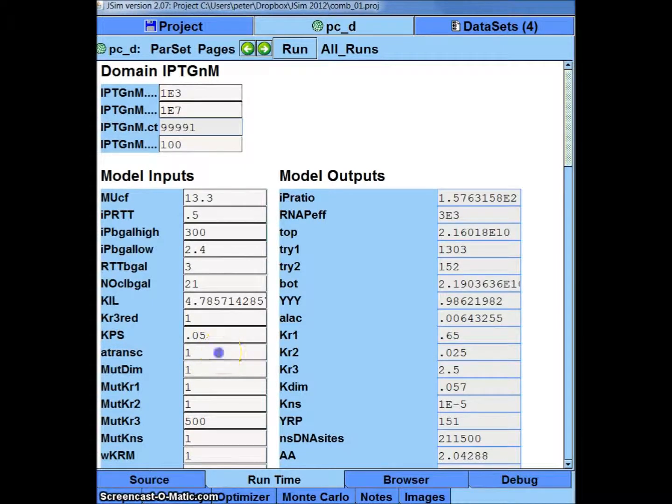In these model inputs, we need this one to be 5.3. And down here, 1. And go back up here. Click run.